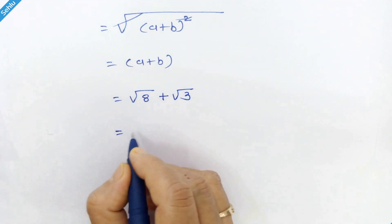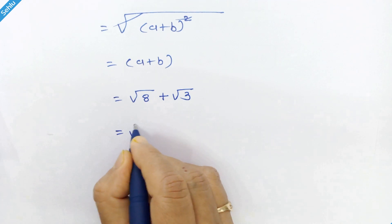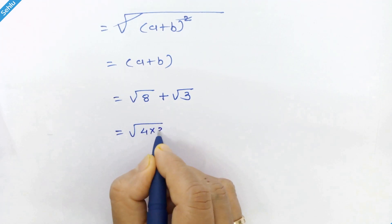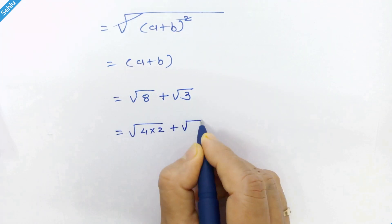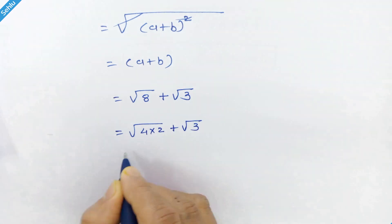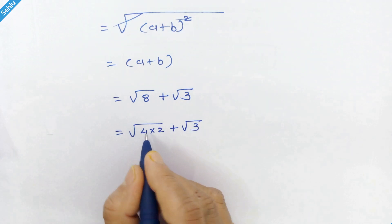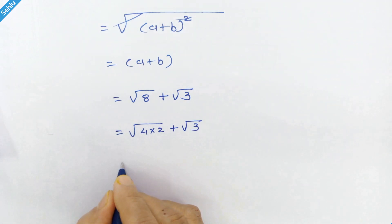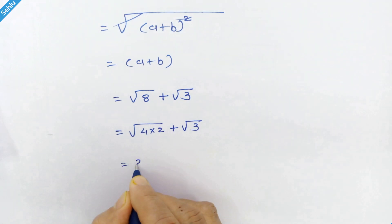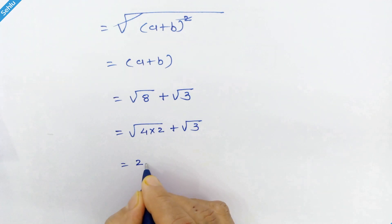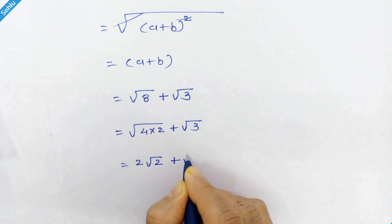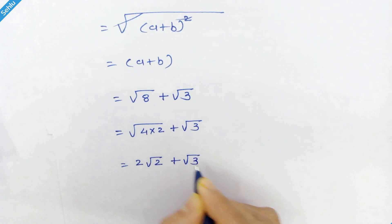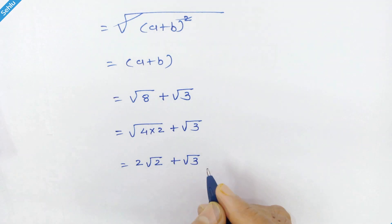Square root of 8 can be written as square root of 4 times 2. Square root of 4 is 2, so we can write 2 times square root of 2 plus square root of 3. This is the simplified version and that's the solution.